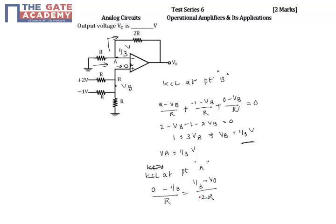R gets cancelled, so 1 by 3 minus V0 is equal to minus 2 by 3. This implies V0 equal to 1 by 3 plus 2 by 3, so this is 1 volt. V0 equals 1 volt.